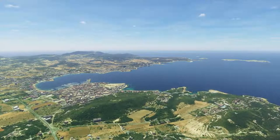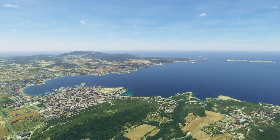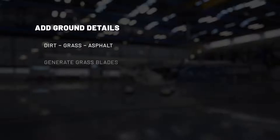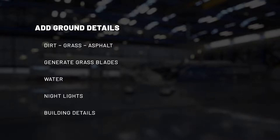But how about the fine details? It is impossible to accurately capture all the very fine details of the world — you cannot know exactly where each blade of grass is or which precise details you have on a given building. So in order to add this level of precision to Microsoft Flight Simulator, we relied on procedural generation. We are adding ground details for dirt, grass, and asphalt. We generate actual 3D geometric grass blades and display millions of them on screen. We also add water shading, to the point that the water is even affected by the wind, which creates waves. We also add night lights both along the roads and on the buildings, and we add details to buildings. All of this helps create a much more believable world.